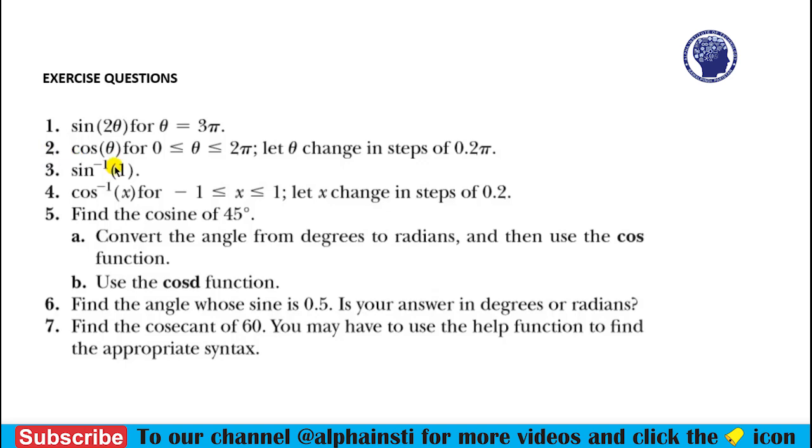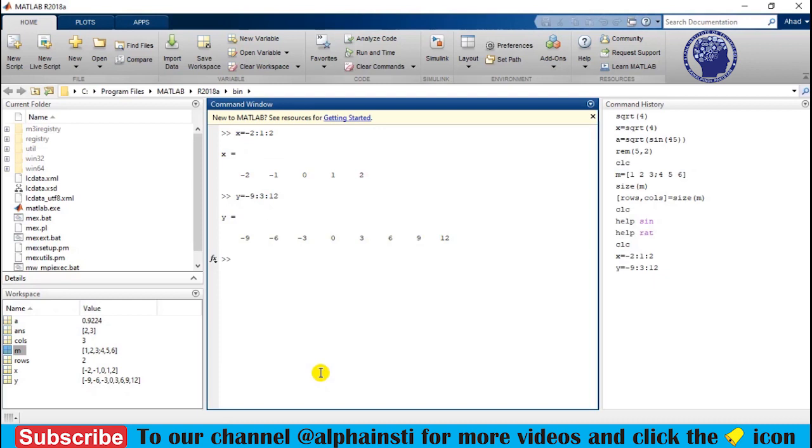In the second question, you have to calculate cos(θ) for θ from 0 to 2π, and the theta is in steps of 0.2π. It's very simple, so I'll show you how you can do it.